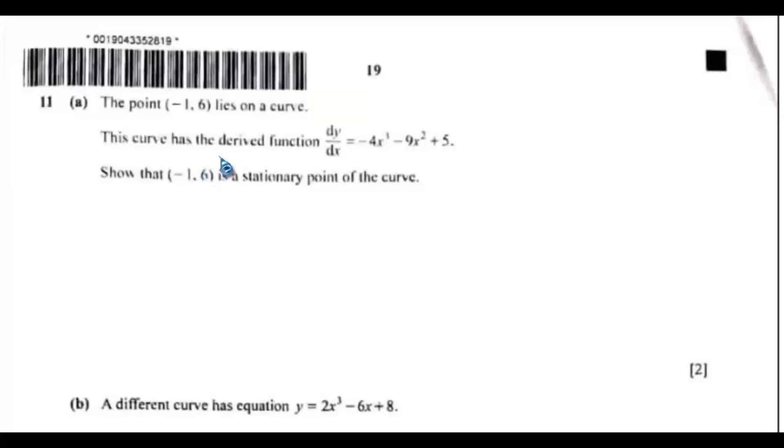So at a stationary point, the dy/dx is always equal to 0. So if this point is on the curve, it's a point of the curve.